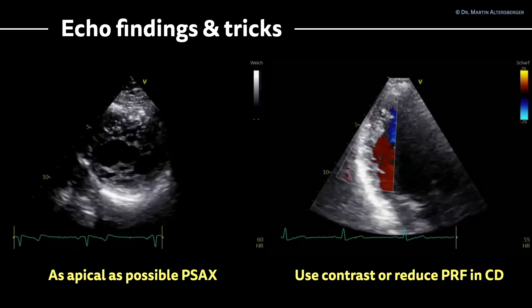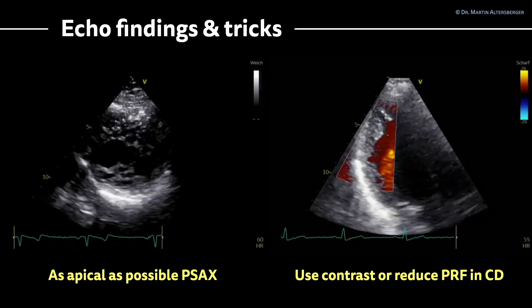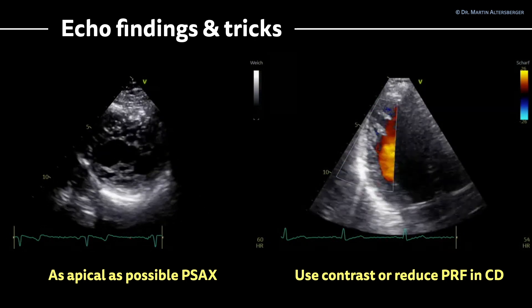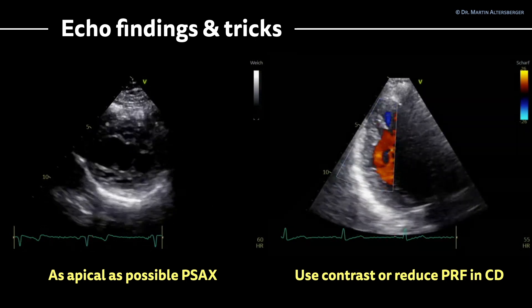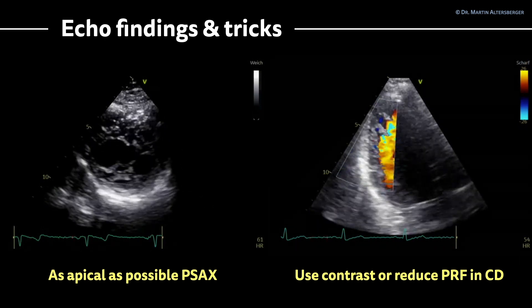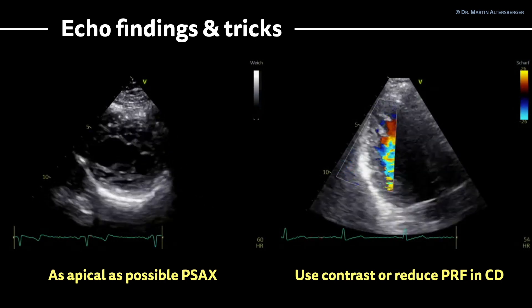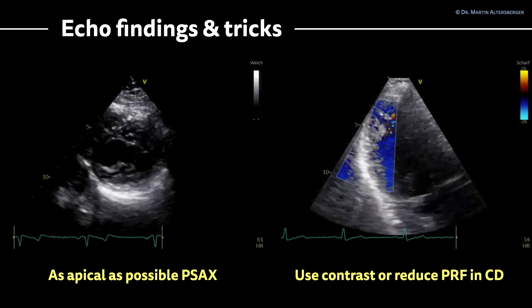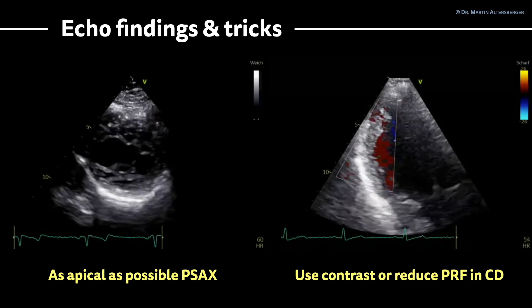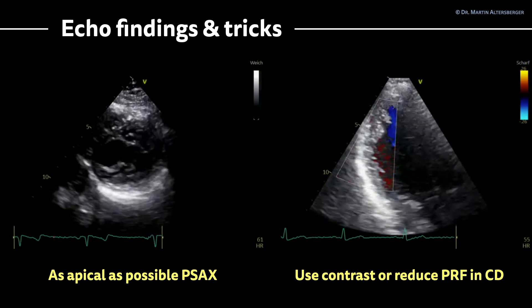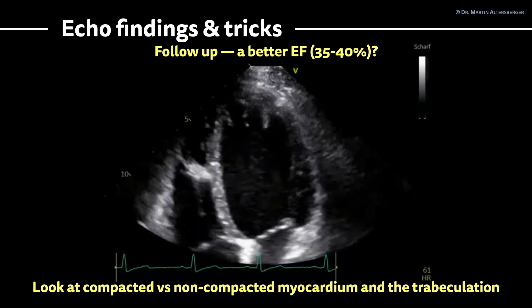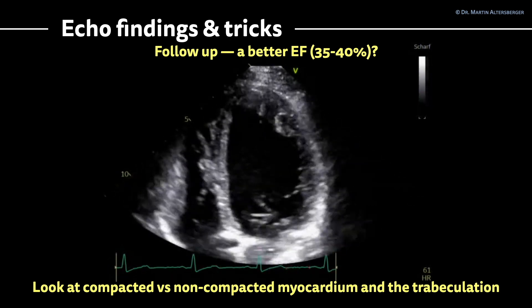Use a two-chamber view and apical long axis view — possibly rotated slightly counterclockwise — to better display the trabeculations. You can also use contrast, or simply use PRF in color Doppler if contrast is not at hand, to see blood flow in between the trabeculations. This makes it easier to differentiate and points you toward the right diagnosis.